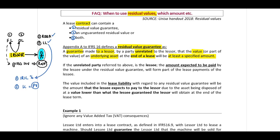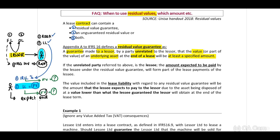In your interest rate implicit of your lease, there might be a future value that you need to include. In your lease liability, there might also be a future value that you need to include. When you look at your lease liability, remember: from whose perspective are you calculating this? You are calculating this from your lessee. Therefore, the amount that your lessee expects to pay at the end of the lease term should be included in your future value.